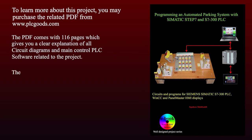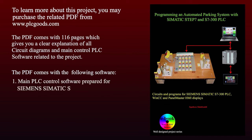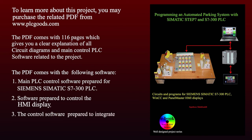The PDF comes with the following software: 1. Main PLC control software prepared for Siemens SIMATIC S7-300 PLC. 2. Software prepared to control the HMI display. 3. The control software prepared to integrate Siemens SIMATIC WinCC software.